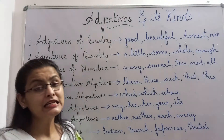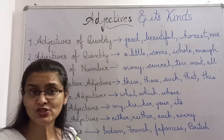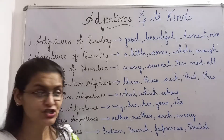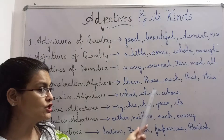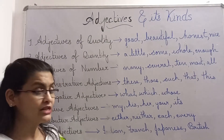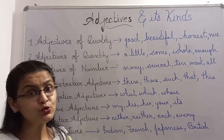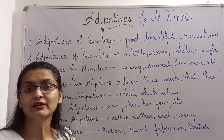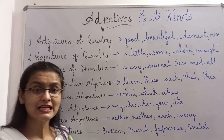Interrogative adjectives are those words which ask questions, and that is why they are called interrogative adjectives. For example: what, which, whose. What book, which table, whose pen. These adjectives are used with nouns for asking questions, and that is why they are called interrogative adjectives.